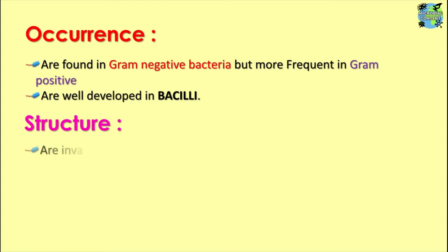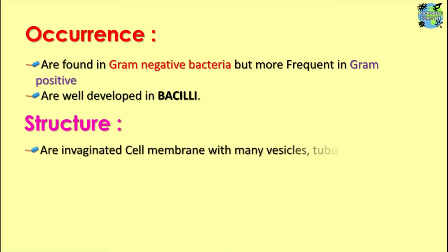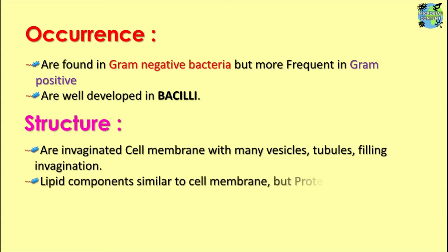Let us come to the structure of the mesosome. These are nothing but the invaginated cell membrane with many vesicles and tubules filling this invagination. They form by invagination of the cytoplasmic membrane and get filled with vesicles and tubular structures. As they are invaginations, the lipid components are found to be similar to the cytoplasmic membrane, but their protein content differs from the cell membrane.